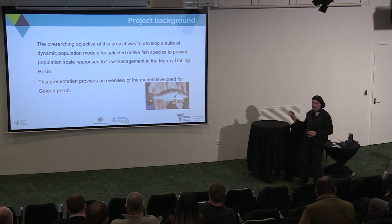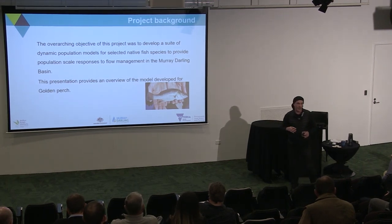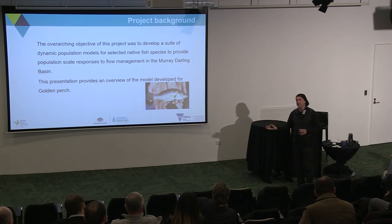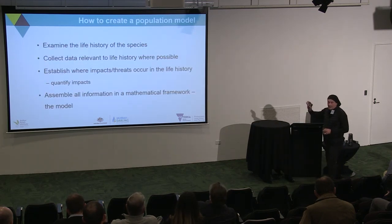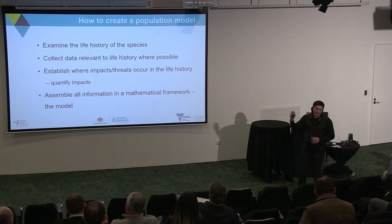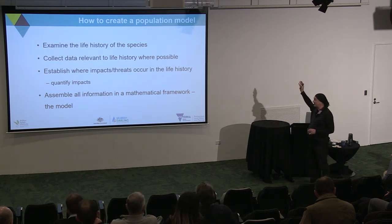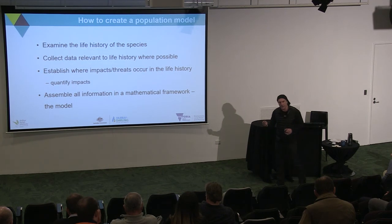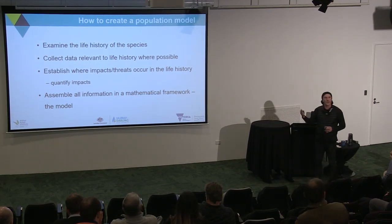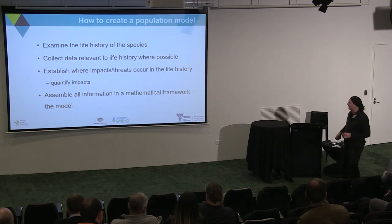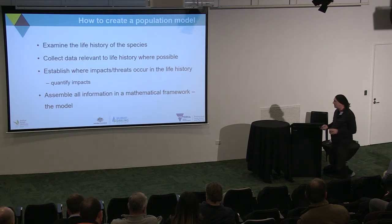The underlying driver for doing all this work is to look at population dynamics in response to flow. So, how do you create a population model? We examine the life history of a species, collect data relevant to the life history where possible, and establish impacts and threats where they occur in the life history. We try to quantify those impacts, and in particular we look at how flow influences the life history. Then we assemble all this information in our model.